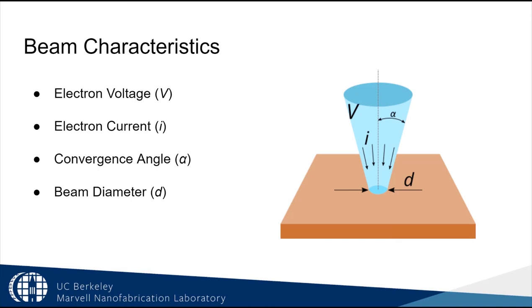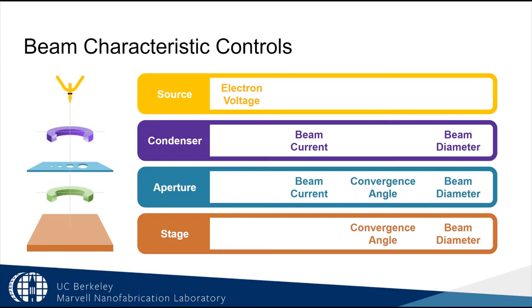To change the size of that cone of electrons, we need to control the electron voltage, the number of electrons in the cone, the convergence angle alpha, and the diameter of the cone when it interacts with our sample. We make various choices with the SEM mechanics to control these parameters. Understanding why we make certain choices will help you get the images you want for your research. There are four SEM components that let you control the beam characteristics: the source, the condenser, the aperture, and the stage.